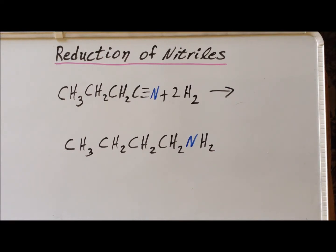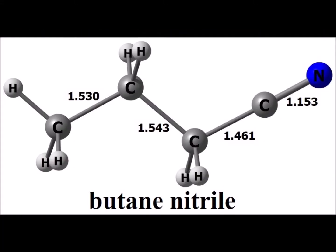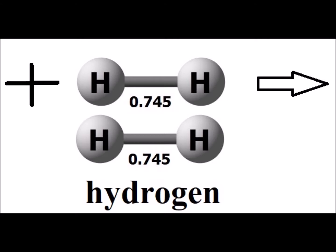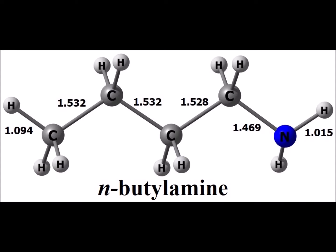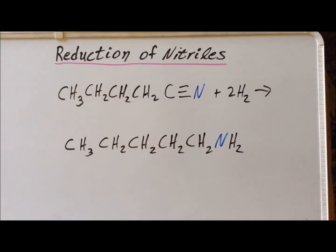Next, we reduce butanenitrile to N-butylamine. Here we have pentanenitrile being reduced to give the corresponding primary amine. Please see the following diagrams which show the computed structures of the reactants and the products.